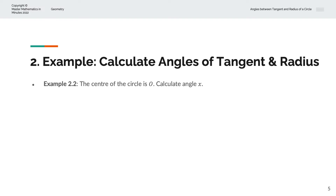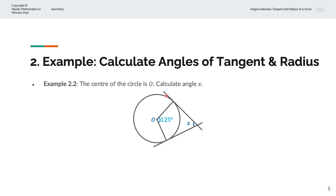In the second example, we're given that the centre of the circle is O, and we're asked to calculate angle X. We have a tangent line touching the circumference, and a radius extending from the centre to that tangent line. Similarly, a second radius extends from the centre to another tangent line. Both of those angles must be right angles, or 90 degrees. We'll call these A and B.